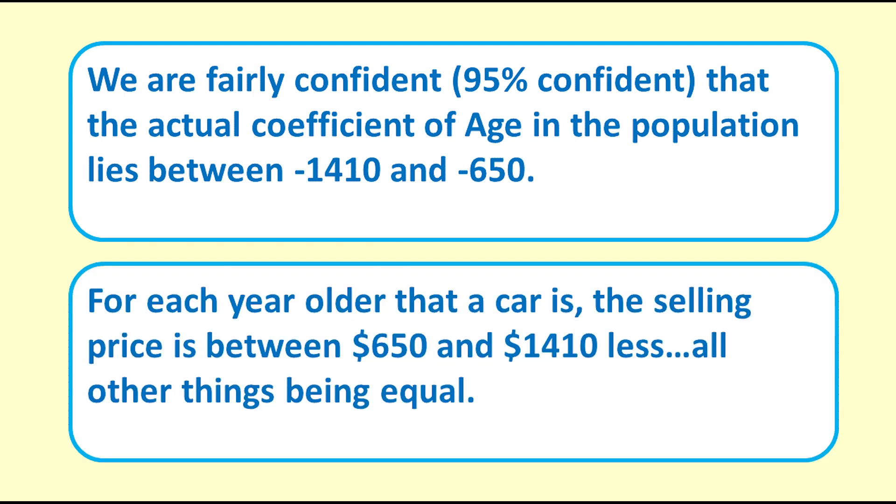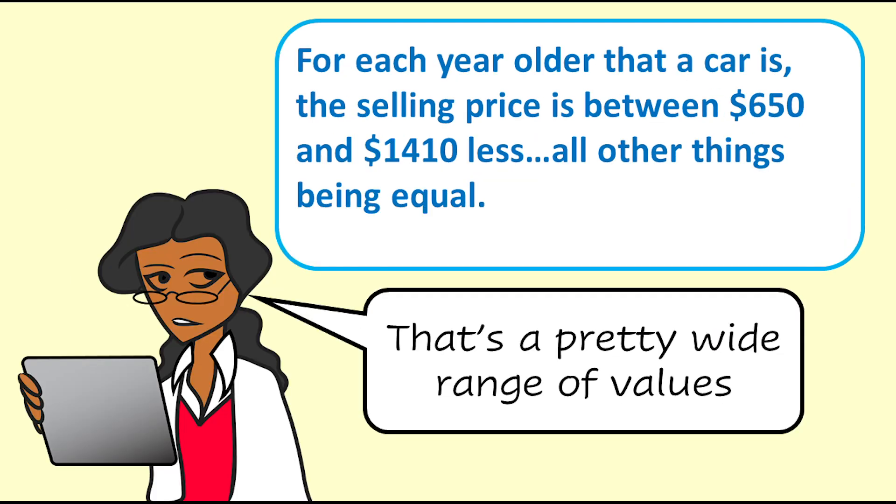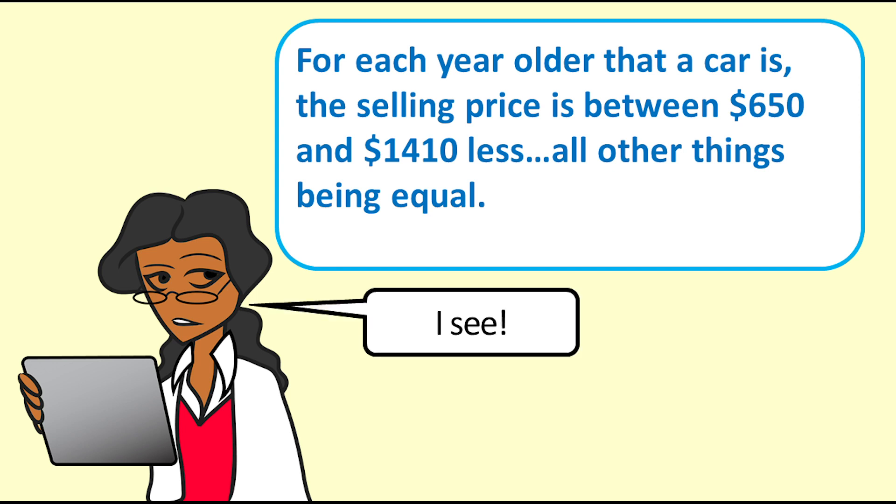For each year older that a car is, the selling price is between $650 and $1,410 less, all other things being equal. Note that we say it is less because the coefficient is negative. For positive coefficients, we would say that it is more. 650 to 1410 is quite a wide range of values because there is quite a lot of variability in the data, and it's not a very large sample.